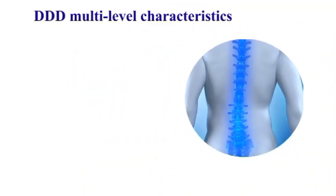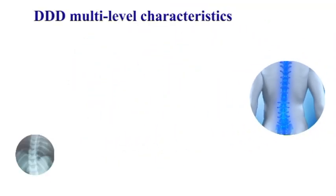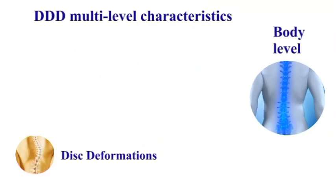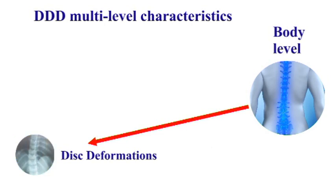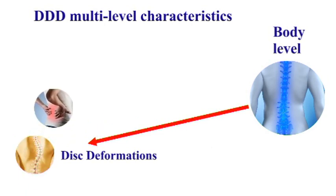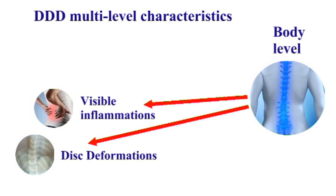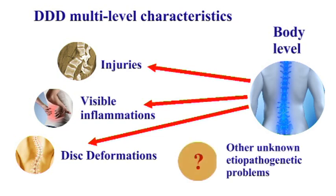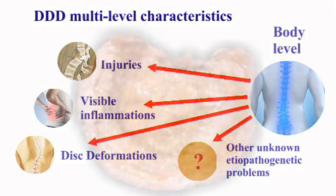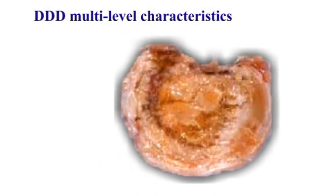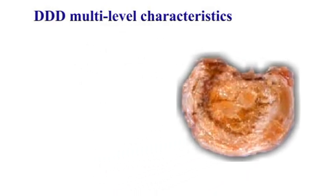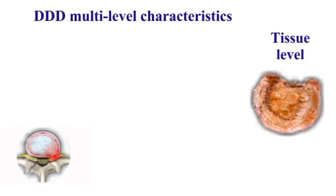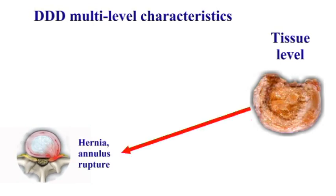The main problem of degenerative disc disease is its multi-level characteristics, based on a long cause-and-effect chain. The problems seen on the body level are in fact generated from the tissue level, where we can highlight many specific problems such as annulus rupture, nerve root touching, protrusions, and others.